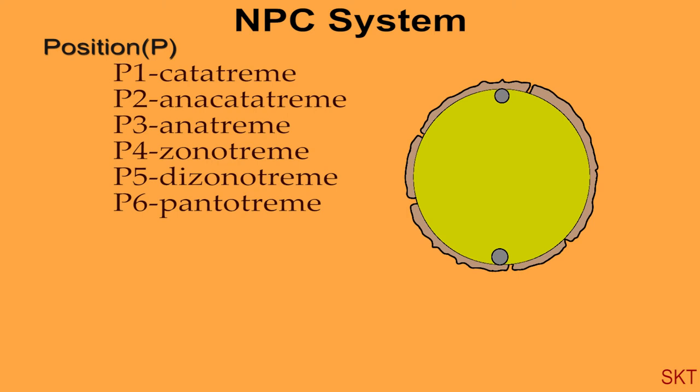P2 is called anacatatreme meaning these have two apertures, one at the proximal end and the other at the distal end. P3 is also called as anatreme, here only one aperture is present that too at the distal position.